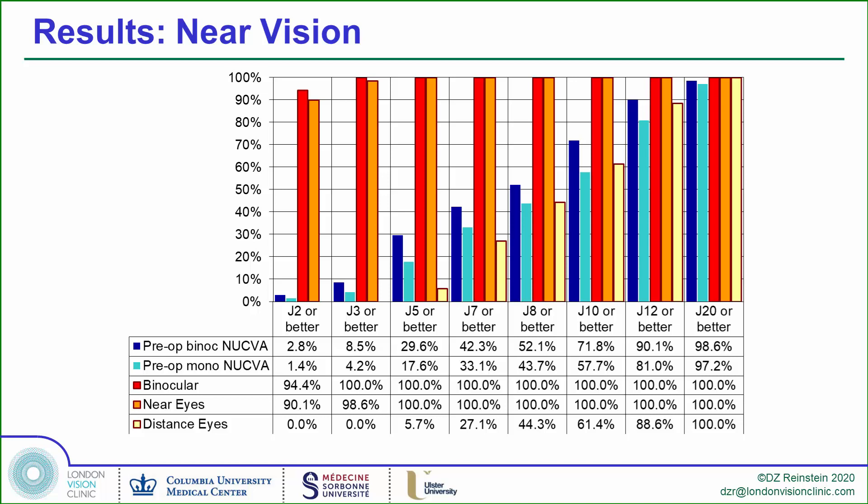Looking at the near vision results, binocular uncorrected vision greatly improved after surgery, with binocular near vision at J2 in 94% and J3 in 100% of patients. The dominant distance eyes also contributed to near vision, with 80% of them seeing font size 12 at near.